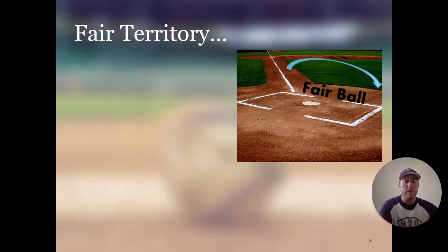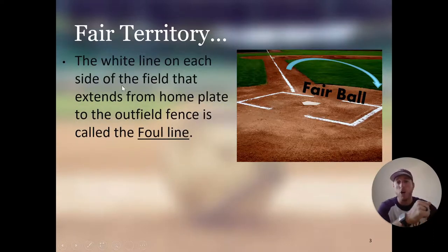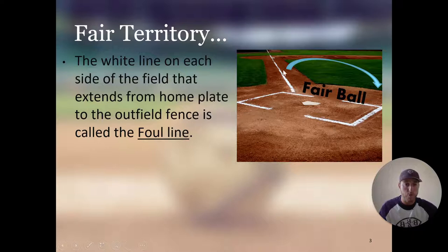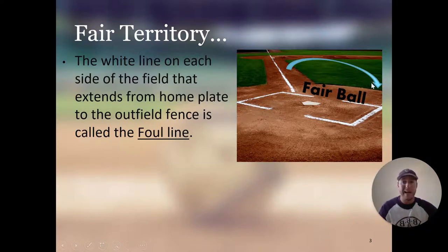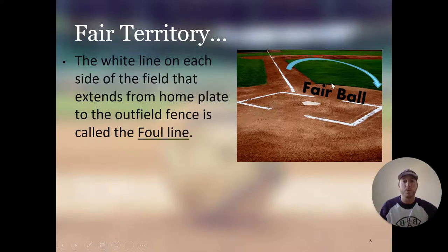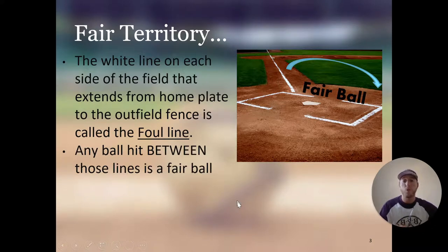Fair territory — as you can see from this picture, this is a fair ball. The white line on each side of the field that extends from home plate to the outfield fence is called the foul line. It goes from the tip of home plate all the way to the end of the field, and there's one on each side. Any ball that is in between those two lines in the field of play is a fair ball — that is fair territory, and that is where all the plays happen. These foul lines are very similar to out-of-bounds lines in other sports like soccer or football.